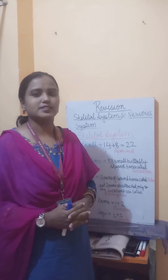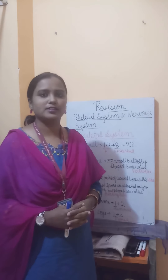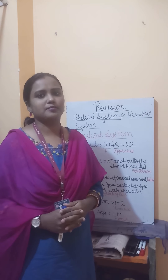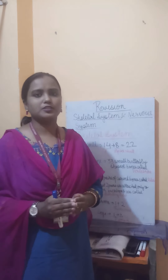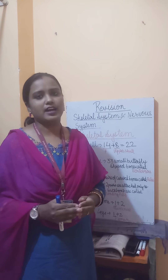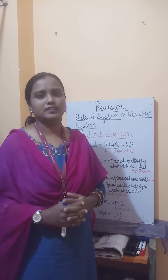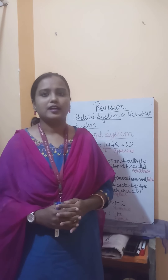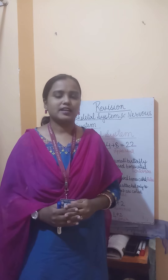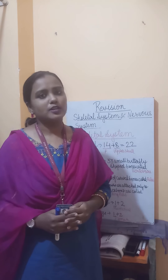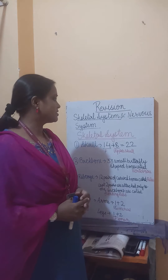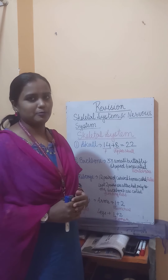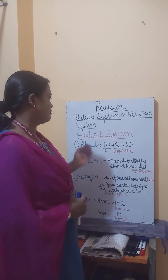All of you know both of these — the skeletal system and the nervous system are organ systems present inside our body. An organ system is a system in which a group of organs work together to perform one particular task. Inside a human body we have 8 major organ systems. In this chapter we will be studying about 2 of them: the skeletal system and the nervous system. Let's begin with the skeletal system.